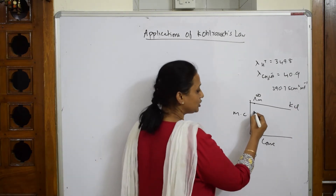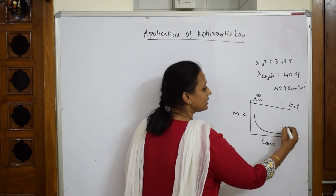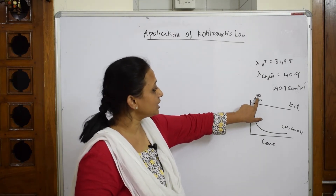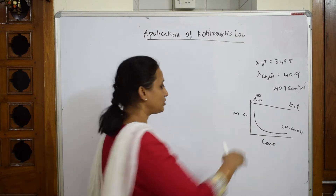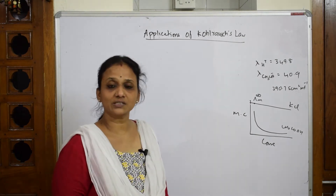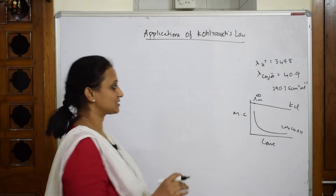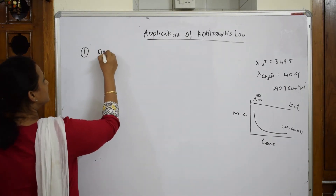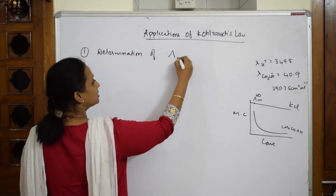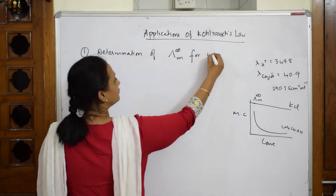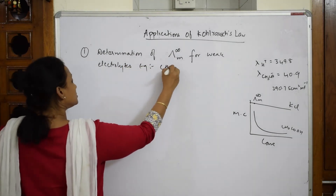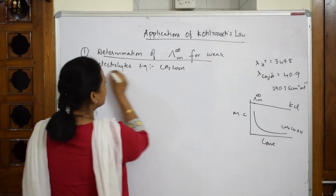For weak electrolytes like CH₃COOH, the graph has a different shape, and we cannot extrapolate and join it the way we do for strong electrolytes like KCl. This is where the application of Kohlrausch law comes in. The first application is the determination of molar conductivity at infinite dilution for weak electrolytes, such as acetic acid, because we cannot extrapolate the graph.